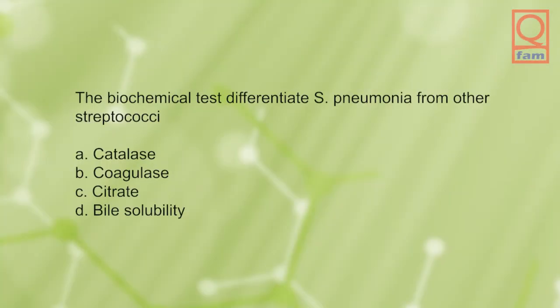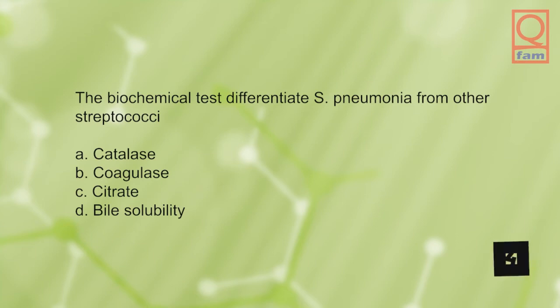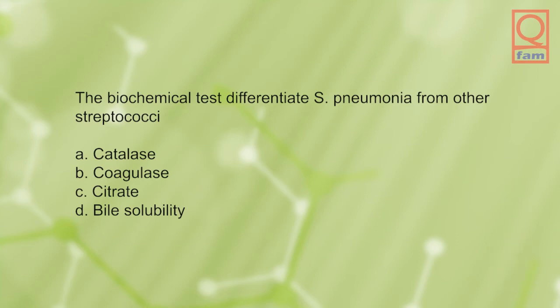The biochemical test that differentiates S. pneumoniae from other streptococci: A) catalase, B) coagulase, C) citrate, D) bile solubility. The answer is D, bile solubility.